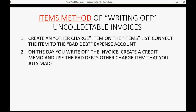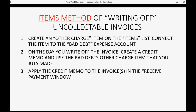Step two: on the day that you write off the invoice, create a credit memo and use the bad debts other charge item that you just made. Step three will be to apply that credit memo in the Receive Payment window. You will apply the credit memo that has the bad debt to the invoices being written off, and that is what will wipe it out of the customer's balance so you will not see the uncollectible invoices in the open invoice report.